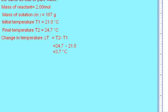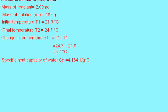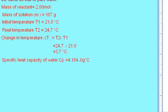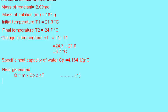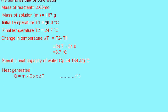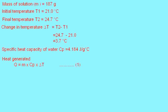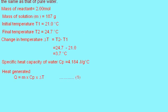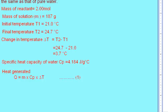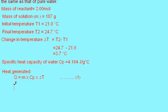The specific heat capacity of water is always 4.184 joules per gram per degree centigrade. We have the formula: heat released in a reaction is equal to M times Cp times Delta T. We know the values of M, Cp, and Delta T, so we can plug all three values into this equation.